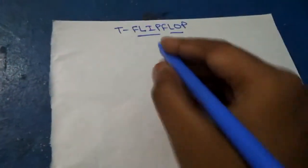Hi friends. Today we are going to discuss the T flip-flop. T stands for toggle, that is the toggle flip-flop. This is also called a modified JK flip-flop. First we will see the logic diagram of the T flip-flop.